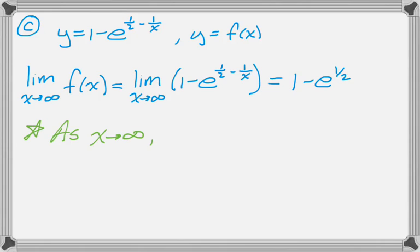And in case you didn't follow that, as x goes to infinity, 1 over x approaches 0. So the exponent of e becomes just 1 half. And that's the whole problem.